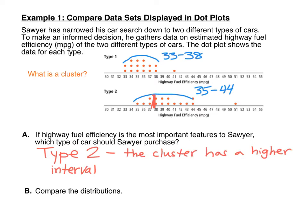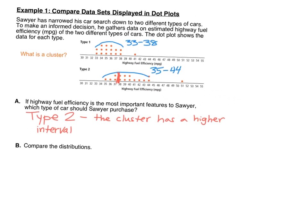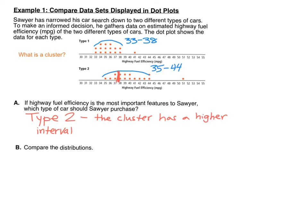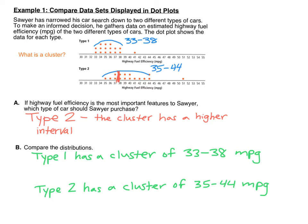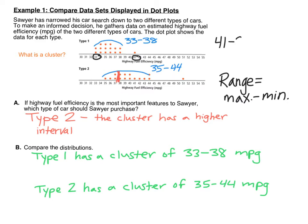Next, let's compare the data distributions. When we compare two data distributions, we're typically looking for two things: the center and the spread. For the center, we're looking at the clusters — where most of the data is located. For spread, with a dot plot you can very easily see the range. Range is the maximum number minus the minimum. For type 1, the max is 41 and the min is 33, so the range is 41 minus 33, which equals 8.